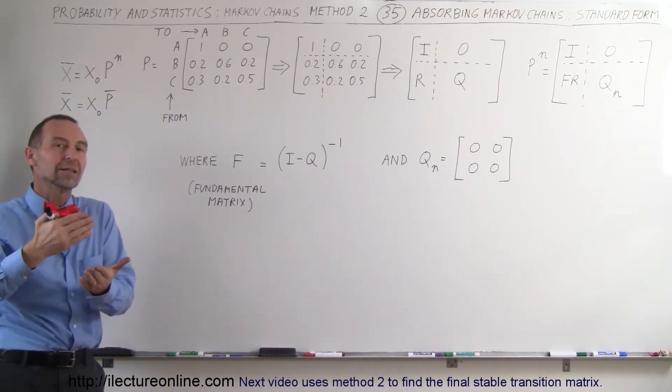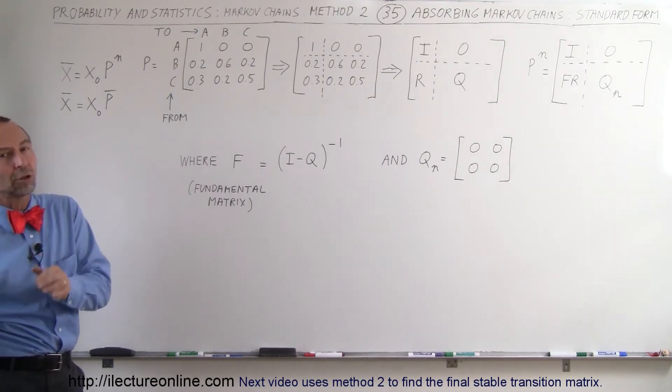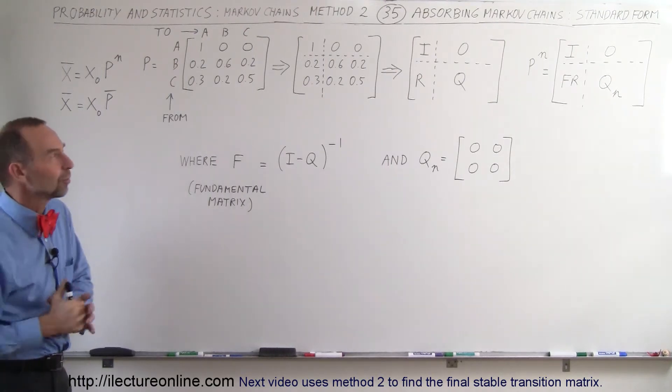If we multiply the initial state times the transition matrix often enough, we'll end up in a situation with all the customers in A and none of the customers in B and C.